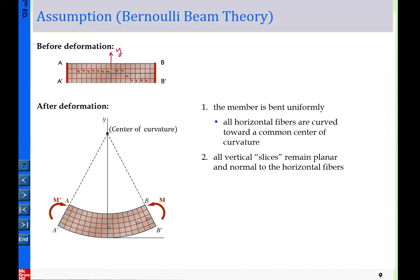The first assumption of Bernoulli beam theory: for any initially vertical fibers that are perpendicular to the horizontal fibers, after deformation we still assume those fibers remain locally normal to the horizontal fiber — locally still 90 degrees. This means an initially straight line remains a straight line after deformation; it does not distort.